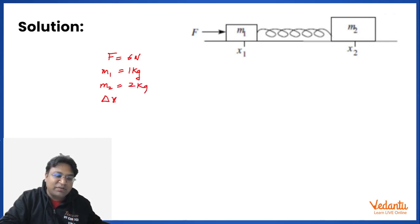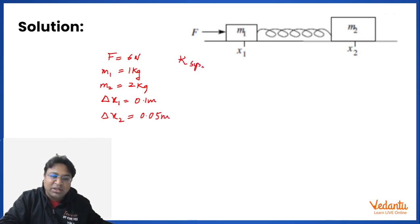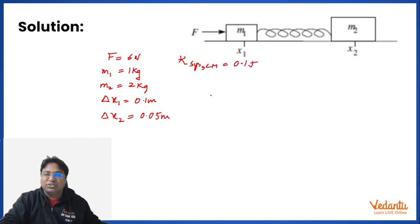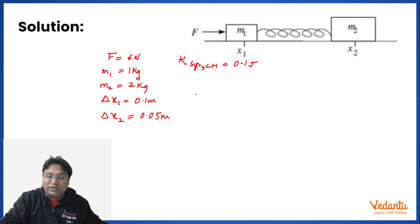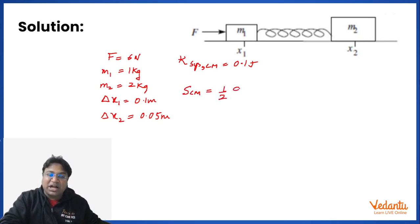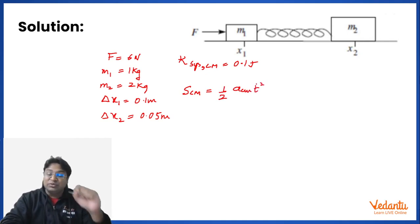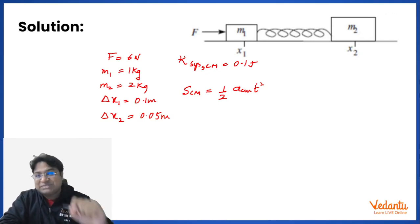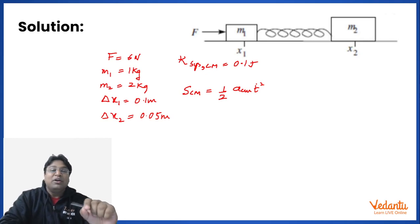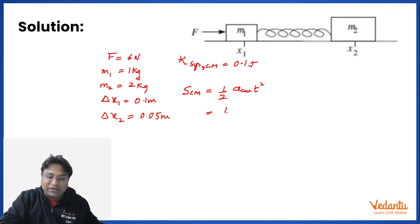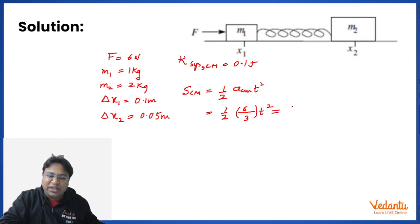The displacement of M1 was given as 0.1 m, displacement of M2 as 0.05 m, and the kinetic energy of the system in the center of mass frame was given as 0.12 J. We need to find the time for which the force acted. I'll write the displacement of the center of mass in two ways — one is (1/2) × a_CM × T².